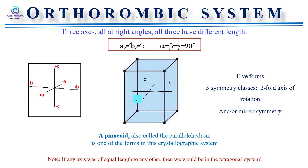All those crystals whose faces can be referred to as three unequal axes at right angles belong to the orthorhombic system. That simply means in the orthorhombic system a, b, and c are unequal in length — that is a is not equal to b is not equal to c — and alpha, beta, and gamma are 90 degrees.